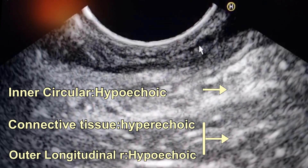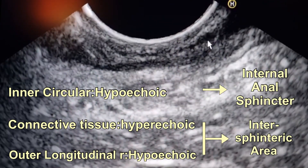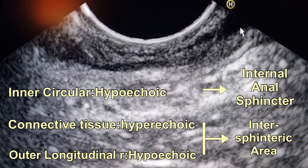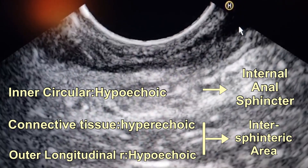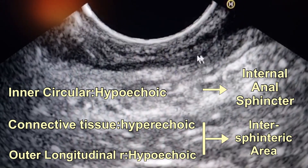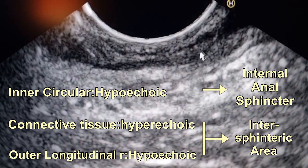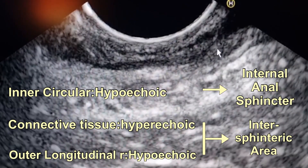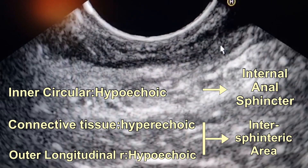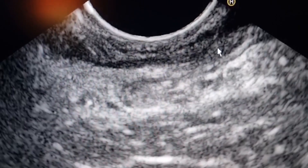The circular muscle layer of the muscularis propria in the rectum will be the internal anal sphincter in the anal canal. And the longitudinal muscle layer and the connective tissue band will form the intersphincteric area, and the external anal sphincter will appear.